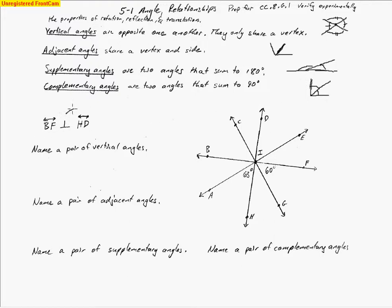This symbol here means perpendicular, which means we have two lines that form a right angle. So when I say that line BF is perpendicular to FHD, that means we have a right angle. So this angle would be right, this angle would be right, this angle would be right, and this angle would be right.